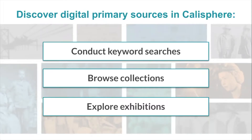In this overview, we'll demonstrate three ways to discover digital primary sources in Calisphere: by conducting keyword searches, browsing through collections, and exploring themed exhibitions.